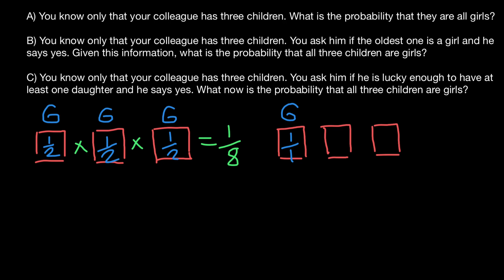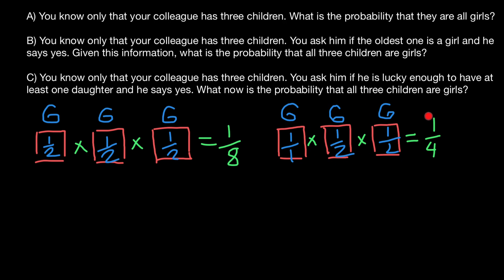Now what is the probability that the second child is going to be a girl? We don't know — it can be a girl or a boy, so probability is one half. And the probability that the third child is going to be a girl is also one half. Multiplying all these independent probabilities gives us one quarter. This is essentially a question about the probability that two children in a row are girls, since we already know the sex of the first child — so we can exclude them from calculations entirely. The answer is one quarter.